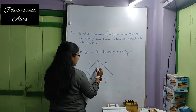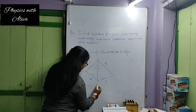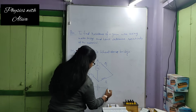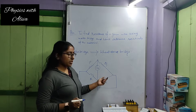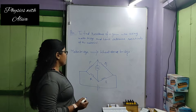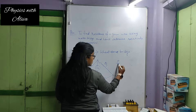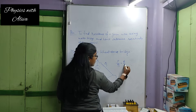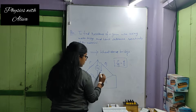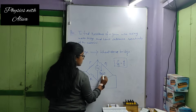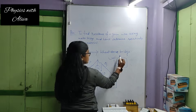We connect a galvanometer and a battery here. When current passes through the galvanometer, the galvanometer deflects. When the ratio of resistance P by Q is equal to R by S, then the current passing through the galvanometer will be zero. This is known as the balanced Wheatstone bridge condition.